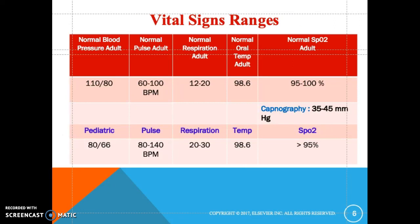The vital signs ranges chart is in your Potter and Perry textbook and shows normal vital sign measurements for adults versus pediatric patients. Capnography has a normal value of 35 to 45. Capnography is the concentration of partial pressure of CO2 in the respiratory gases.